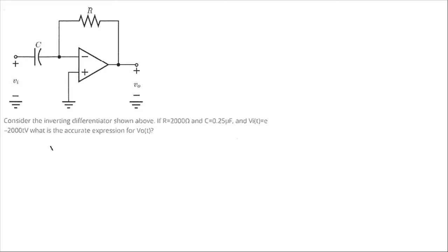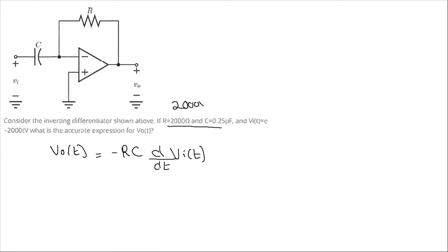Because this is a differentiator circuit, the voltage v_naught(t) will be equal to minus RC times the differentiation of the input vi(t). Now RC: we multiply 2000 by 0.25 microfarad, which is 10 to the power minus 6, and we get 0.5 multiplied by 10 to the power minus 3.